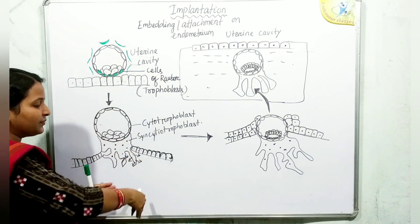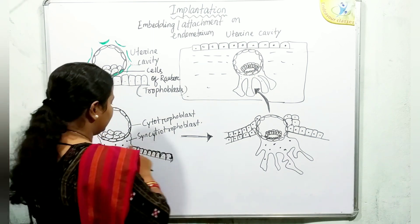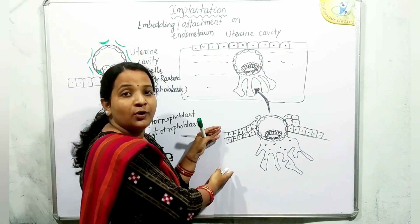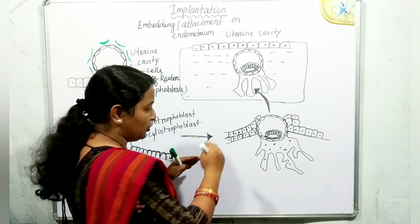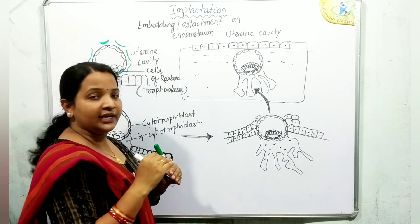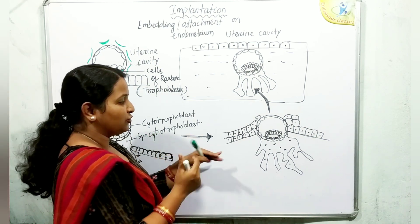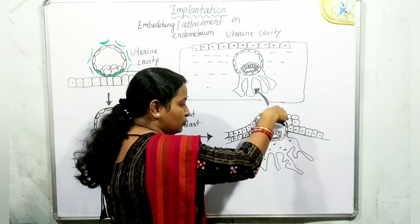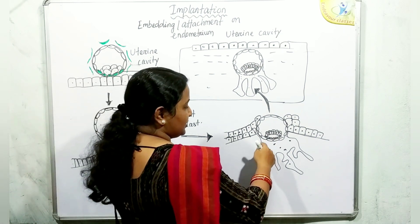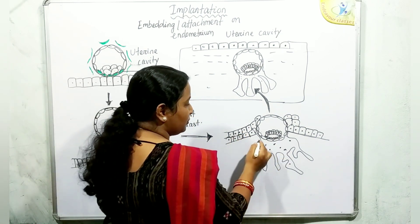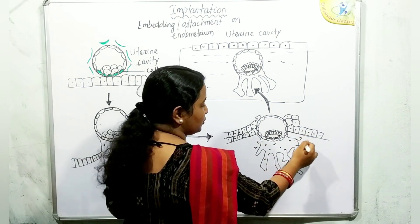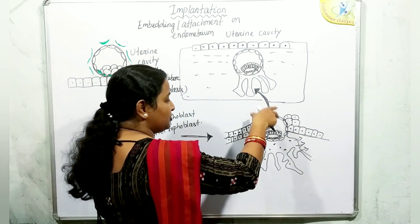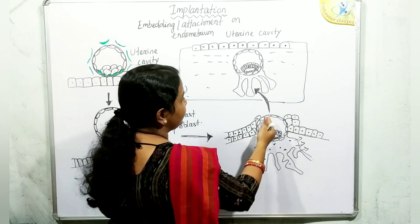The blastocyst gradually sinks into the pit, trying to penetrate the uterine endometrium. This is the stratum functionalis layer, which is the inner layer of the uterine endometrium. The blastocyst penetrates through its syncytiotrophoblast and the proteolytic enzymes secreted by syncytiotrophoblastic cells, which digest the nearby endometrial cells, forming the site through which the complete structure sinks.